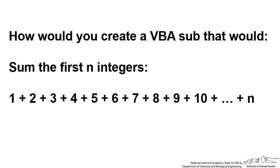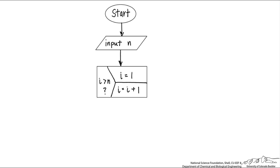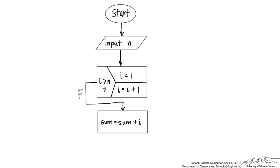The first thing we're going to do is generate a flowchart. We start, then we need some sort of input — we input n. The next step is to iterate through all values of n, and I'm going to use an index of i. So we iterate until i is greater than n. When i is not greater than n, we're going to do something — we keep a running tally, or sum, so sum equals sum plus i.